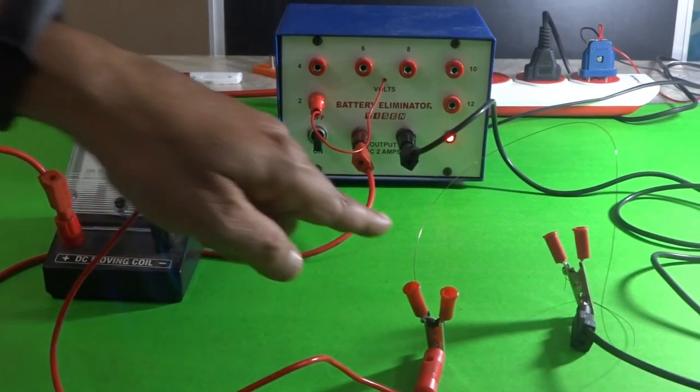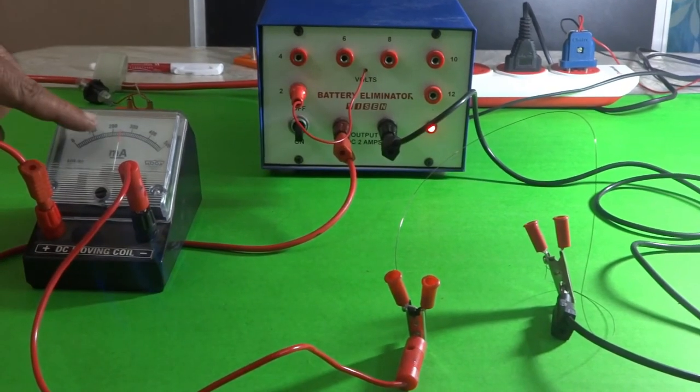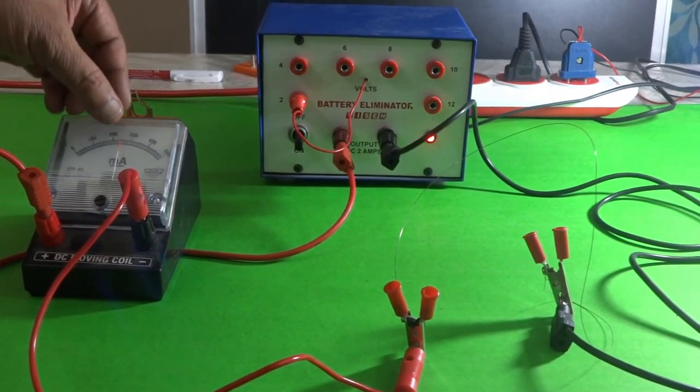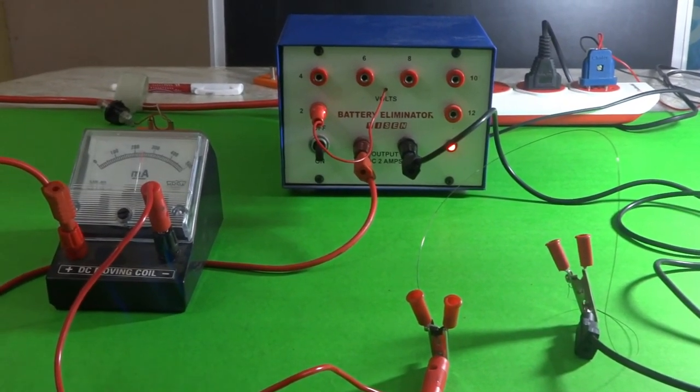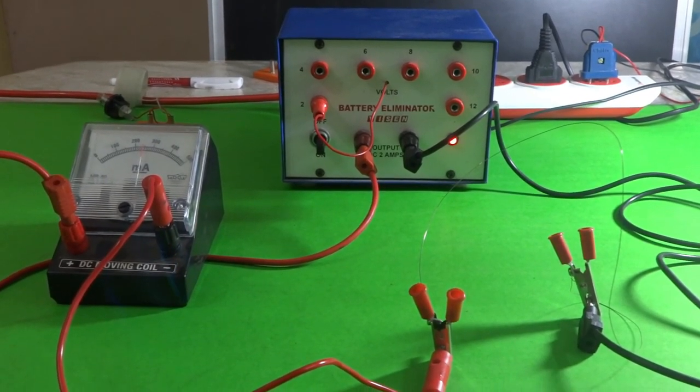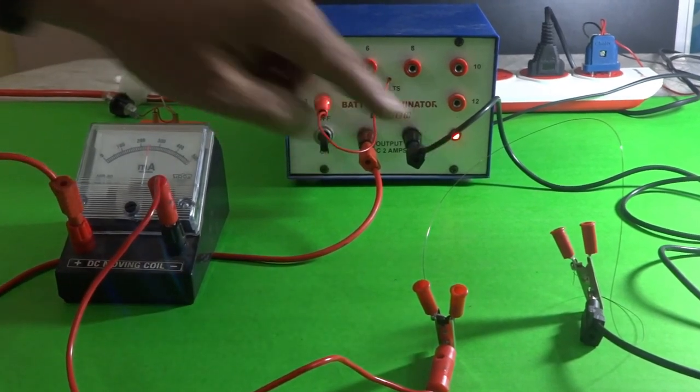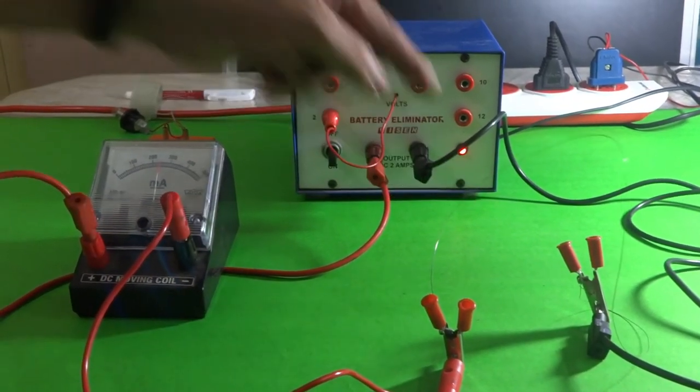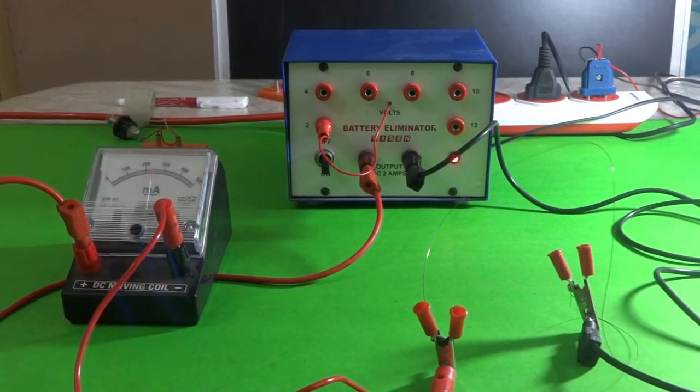In the case of this wire the milliammeter is showing 250 milliamperes and when compared to the two other bulbs it is more. Therefore we can conclude that this is allowing more current through it.